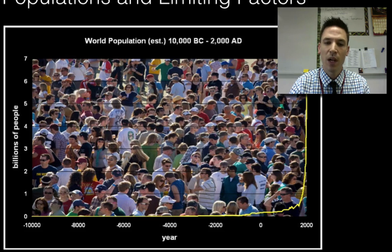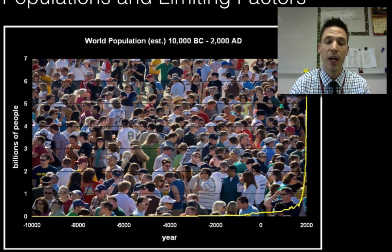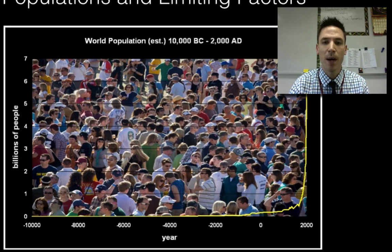It wasn't until about 500 years ago or so that our population really started to skyrocket and take off, and we can attribute that to things like agriculture and advancements in medication and technology. Because of that our population has been able to increase to over 7 billion today.